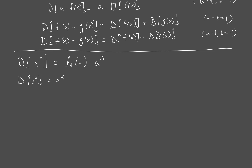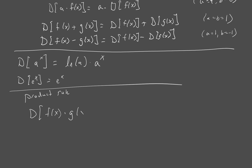We've got the product rule and the quotient rule. The product rule says if I'm going to take the derivative of a product of two functions f times g, I get to take the derivative of each of them individually and then add that stuff together. It looks like f of x times the derivative of g of x plus the derivative of f of x times g of x. So I'm adding all of the possibilities where I'm only taking a derivative of one of the factors.